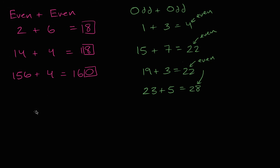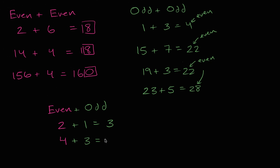Now let's think about one last combination: what about an even plus an odd? Two plus one equals three — that's an odd number. Four plus three equals seven — that's also an odd number. So it looks like if I have an even plus an odd — and I encourage you to try many more cases — an even and an odd is always going to give you an odd.